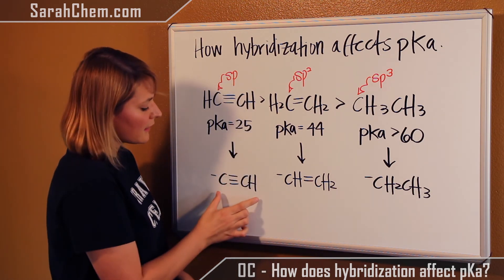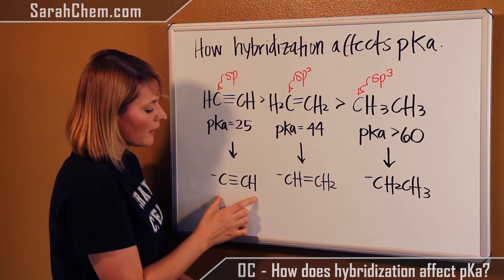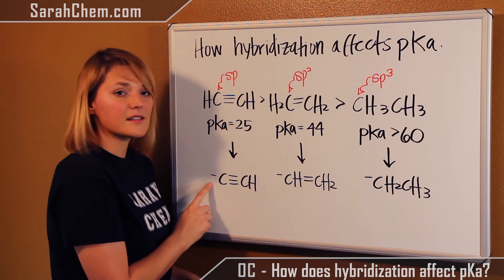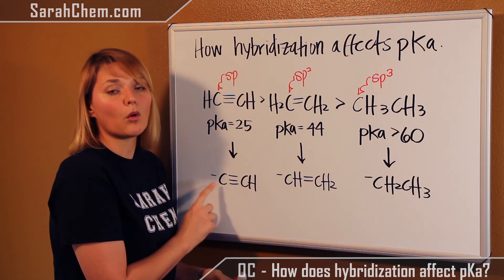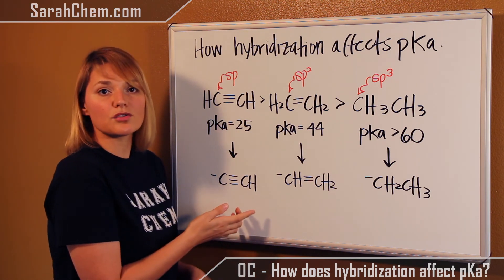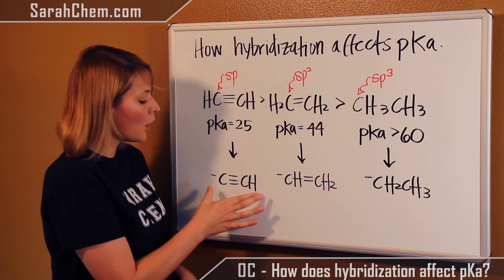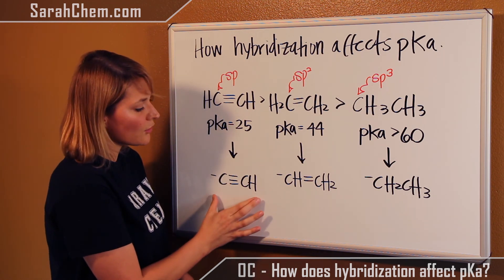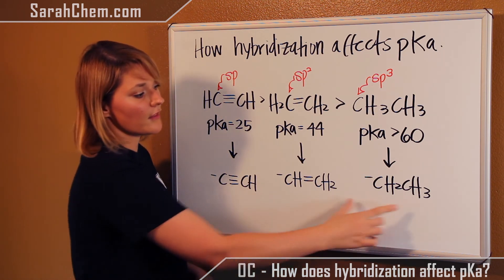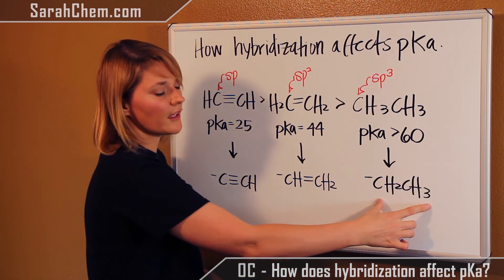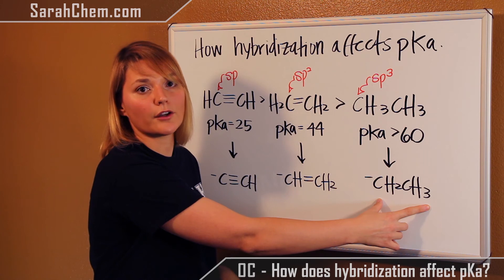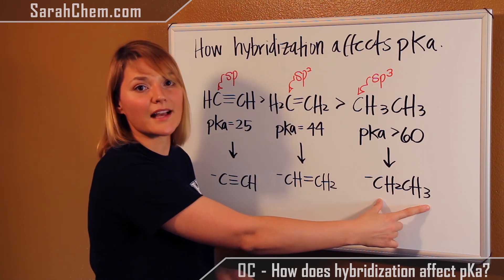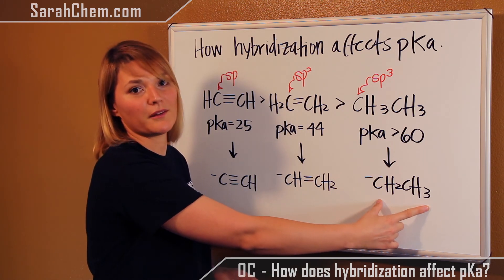So this compound, because its electrons are more stable and closer to the nucleus, would be easier to form than the compound with much less s character, because it's an sp3 hybrid.